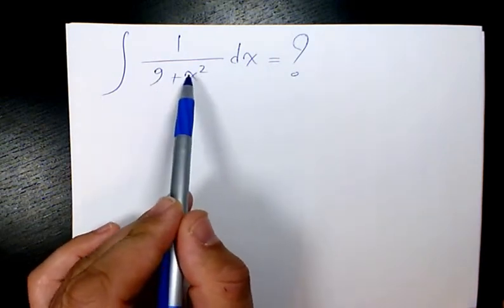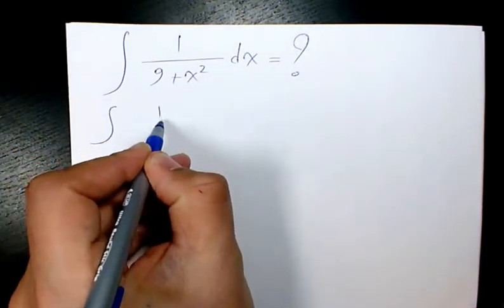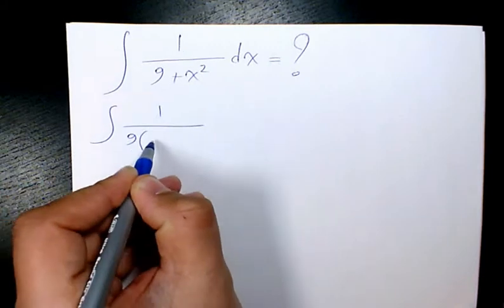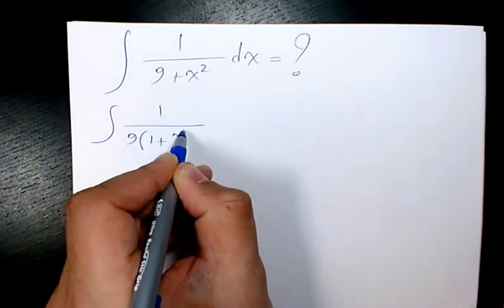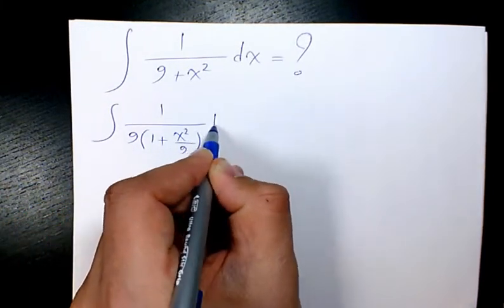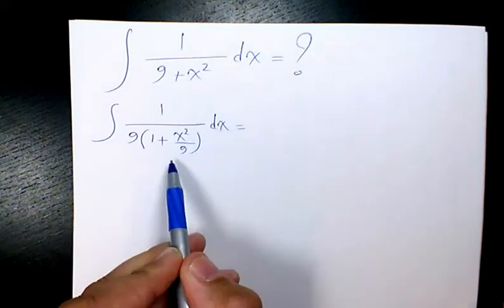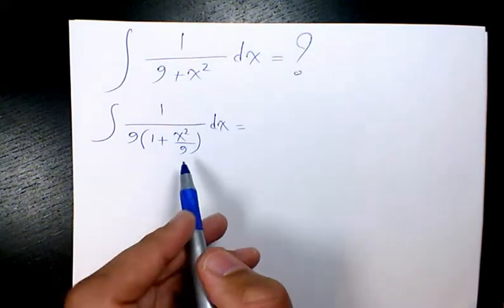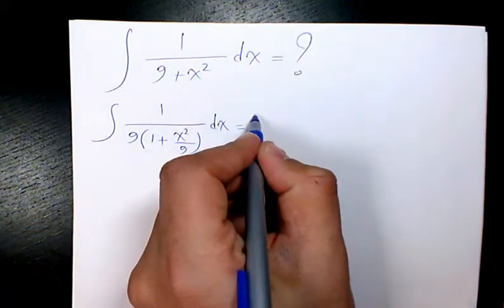First of all, I want to factor 9 in the denominator, so I have 1/9 × (1 + x²/9) dx. I factor 9, then I take this 9 out. It's going to be 1/9 times the integral of 1/(1 + x²/9) dx.